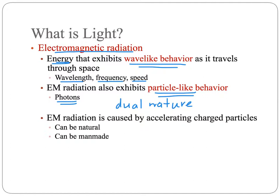Electromagnetic radiation is caused by accelerating charged particles, either electrons or protons. And electromagnetic radiation can be natural. The sun is the primary source of electromagnetic radiation.